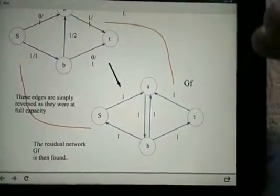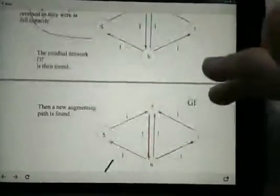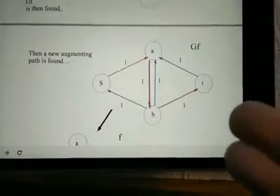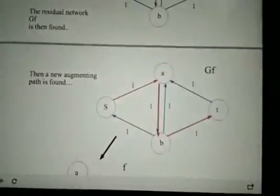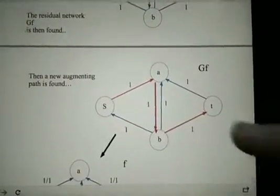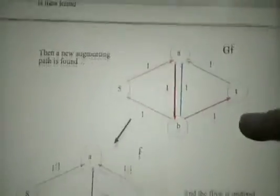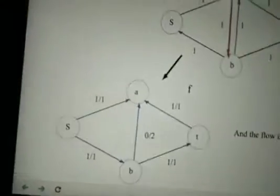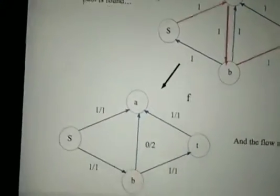Then you find another augmenting path from S to T, as this one in red is. From here, you choose the minimum again out of all the edges in the augmenting path and update your flow: adding 1, adding 1, adding 1 there.